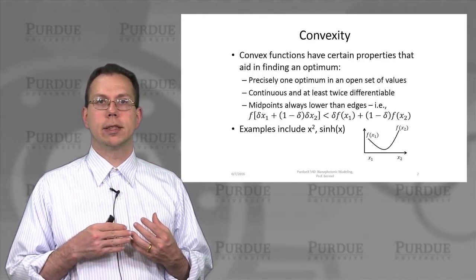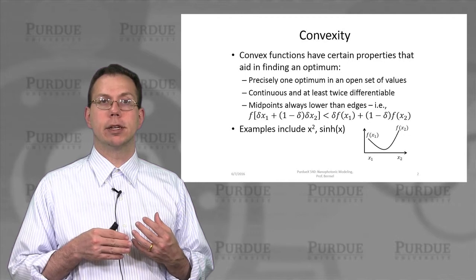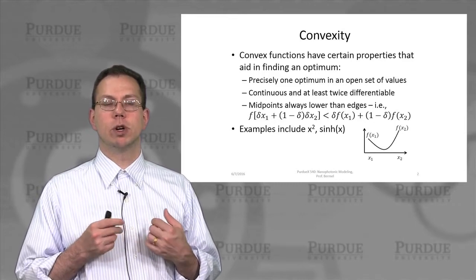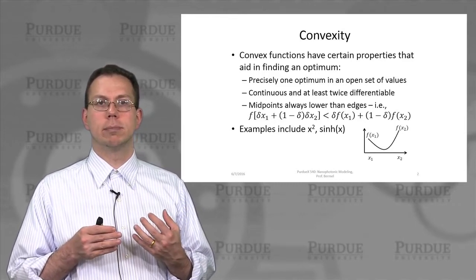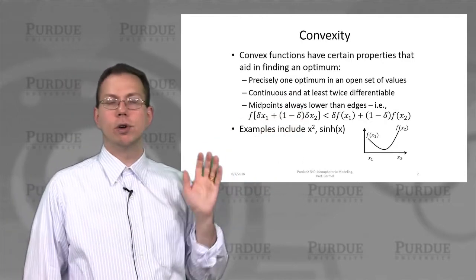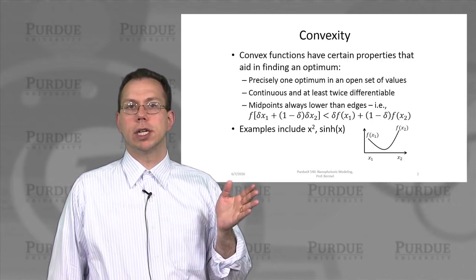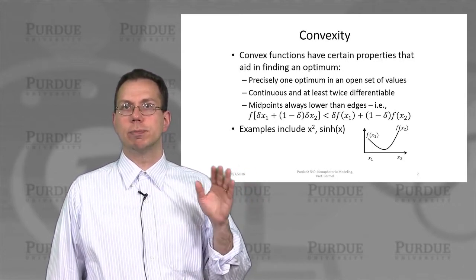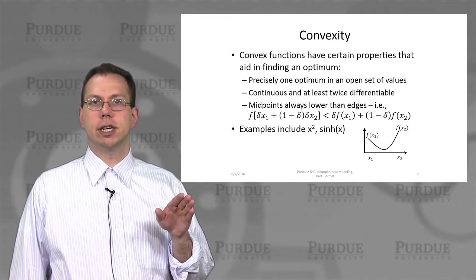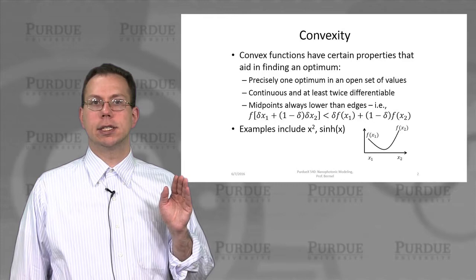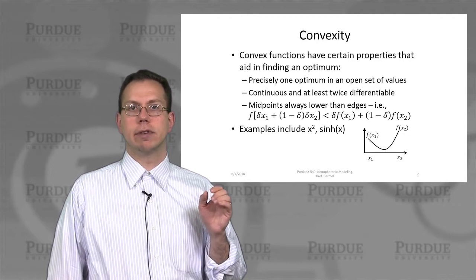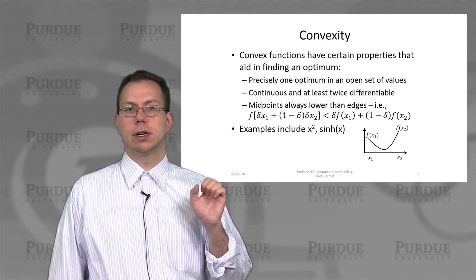And before we were saying that the steepest descent method can actually be very effective for so-called convex problems. So let me just explain a little bit more about what is the meaning of convexity in general. So what that means is basically within an open set of values that there's only one optimum. So you don't have like a double or triple peak that are all the same, for example. And then also that the function that you're looking at itself is continuous and twice differentiable. So that means that it's very smooth. It doesn't have really jagged jumps or dips.